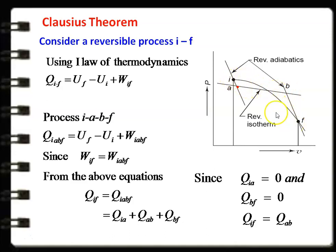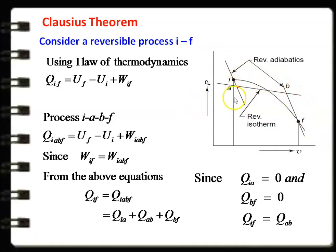The heat transfer in the curved line is equal to the heat transfer in the straight line — that is our conclusion. Using this conclusion, we now derive the Clausius theorem. The curved path I-F is replaced by a straight-line path: we draw a reversible adiabatic line through I, another through F, and connect them with a reversible isothermal line, concluding that Q_IAF = Q_AB.